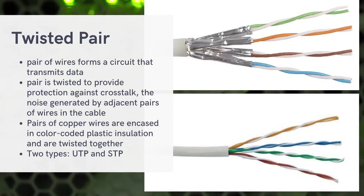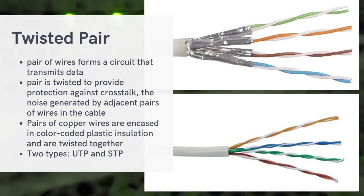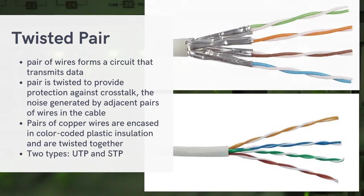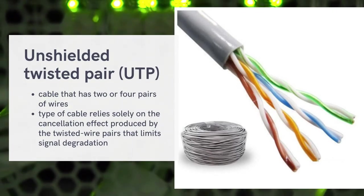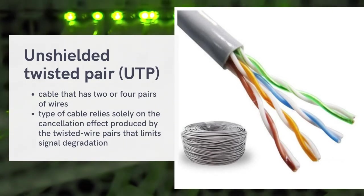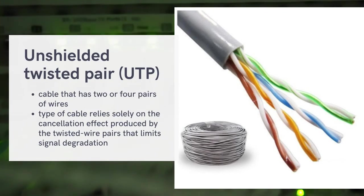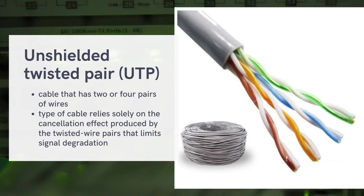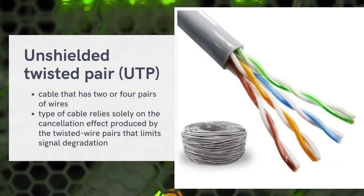There are two types of twisted pair: UTP and STP. UTP, or Unshielded Twisted Pair, consists of four pairs of wires. The cable relies solely on the cancellation effect produced by the twisted wires to limit signal degradation. UTP is the most commonly used cable in LAN because it is easy to use, cheap, and practical.